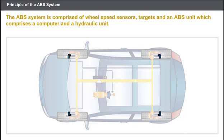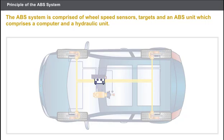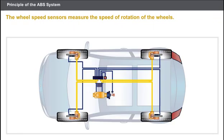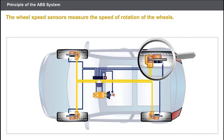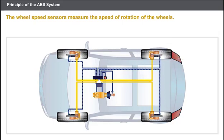The ABS system comprises wheel speed sensors, targets, and an ABS unit. This ABS unit comprises a computer, a hydraulic unit, and a motor driving a hydraulic pump. The wheel speed sensors measure the speed of rotation of the wheels. The rotating targets generate signals that are read by the sensors, which send these signals to the ABS computer. A rapid drop in speed indicates the start of a wheel locking.